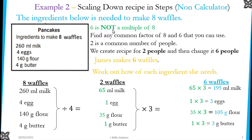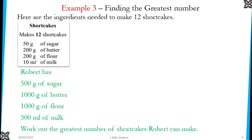We can also use ratio to determine the greatest number of food we can prepare from a given recipe. We're going to use this to explain how you determine the greatest number of food to create from a given recipe. Look at this example.